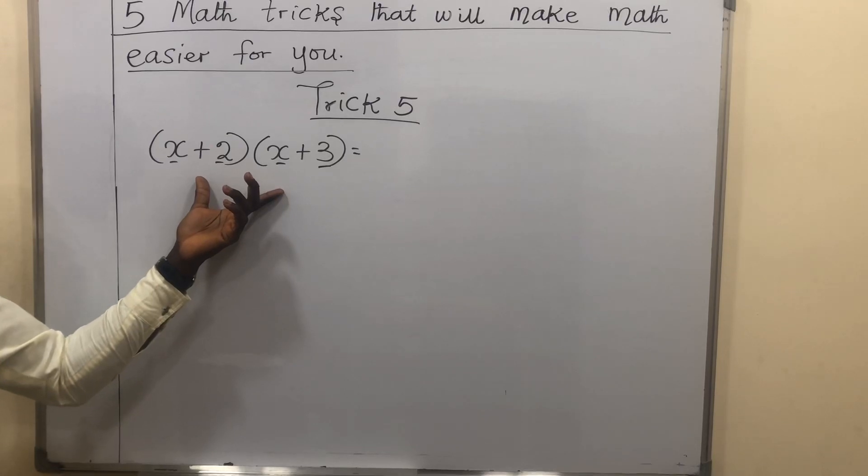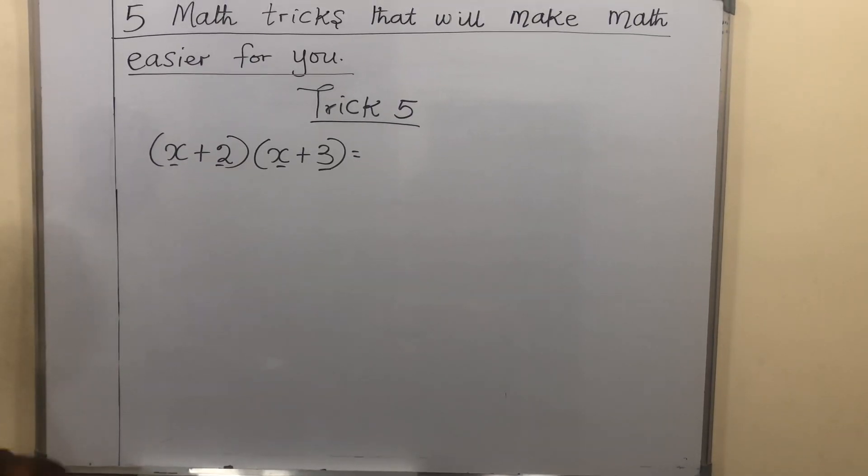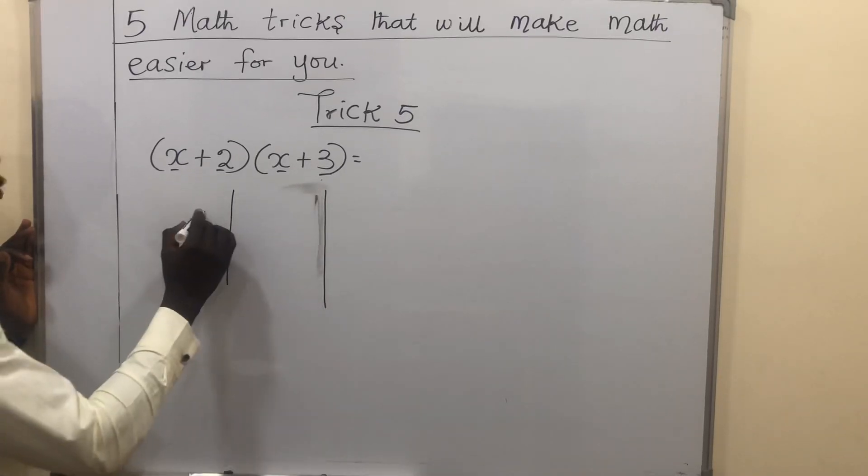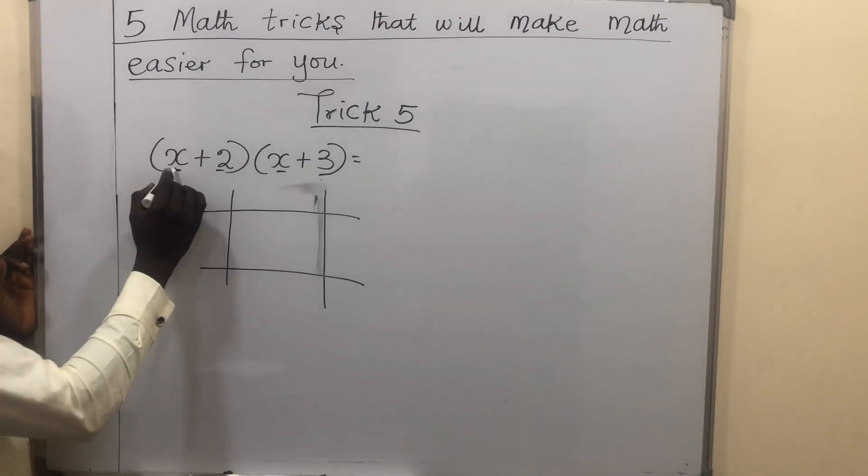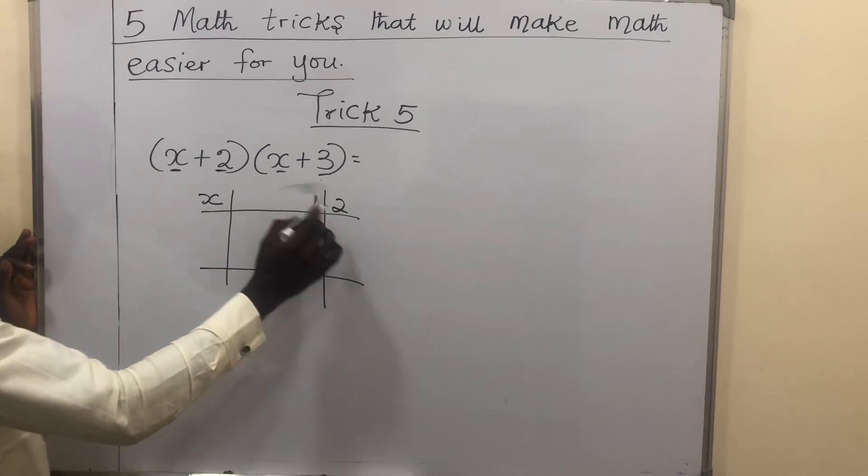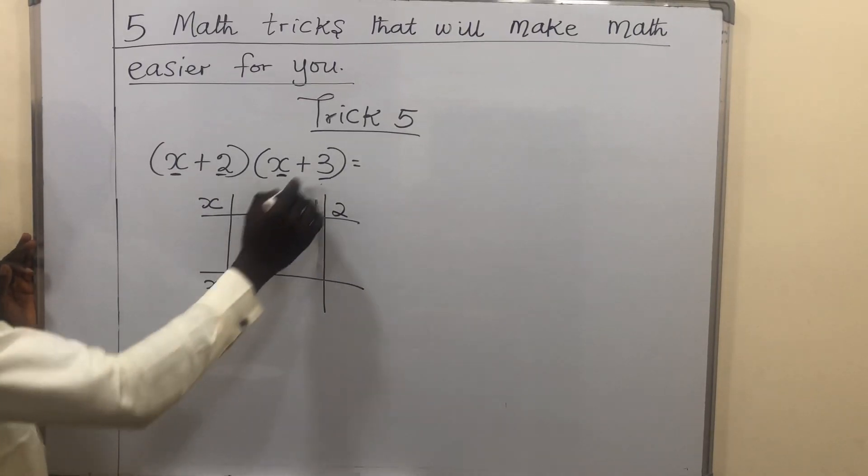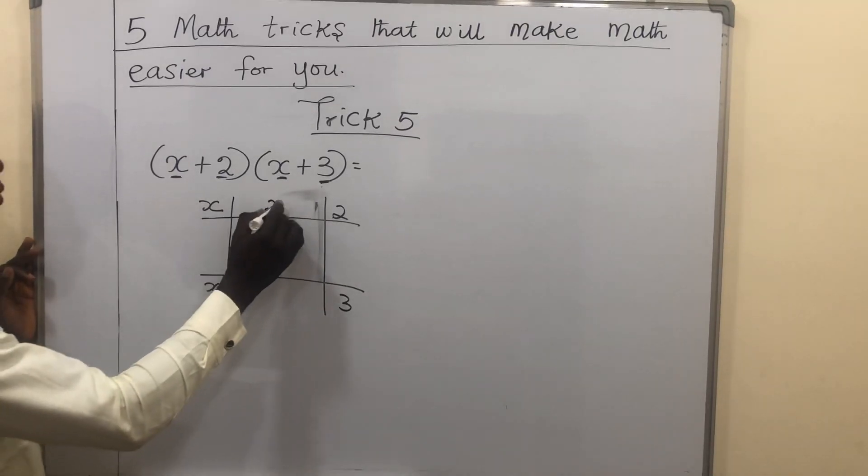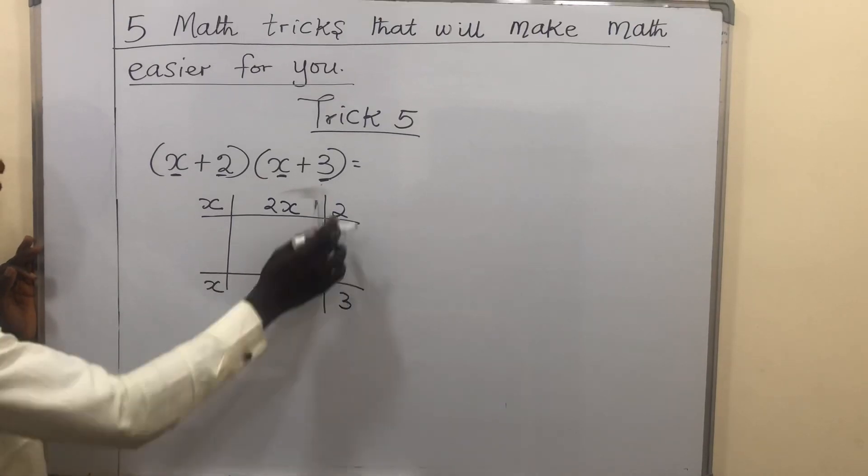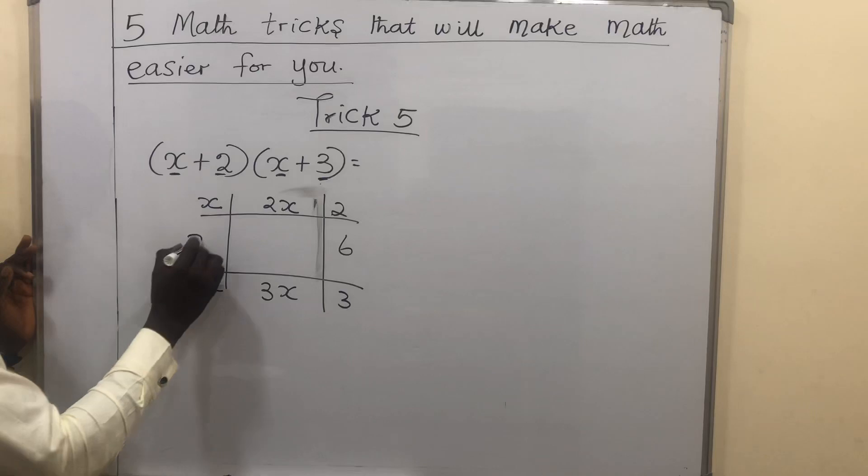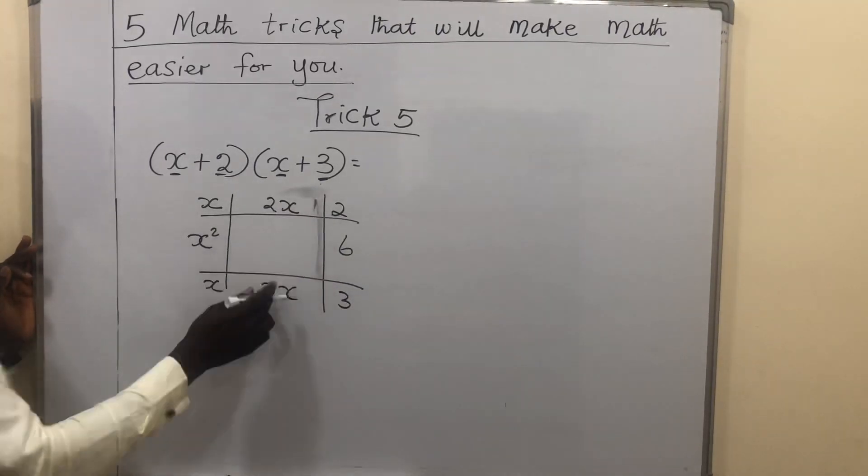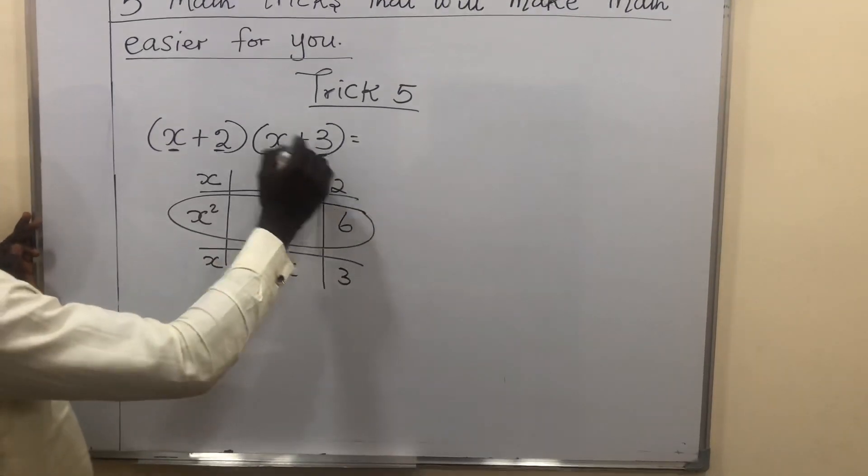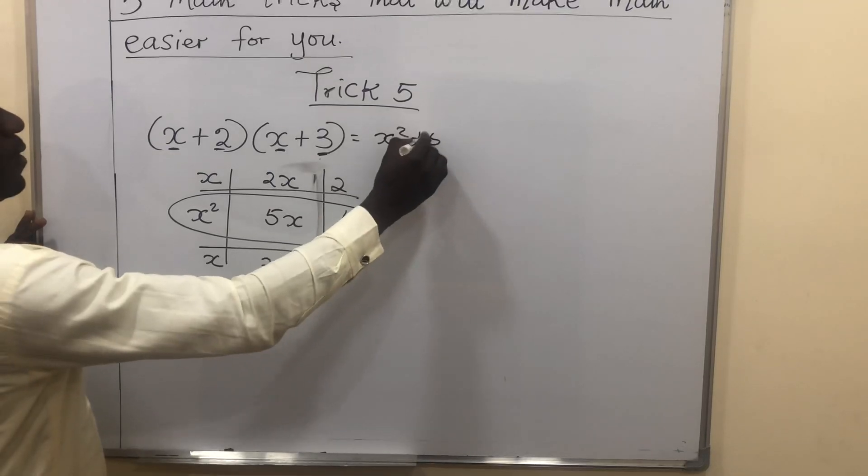Trick 5. For an expression like this, I want to show you an easy way to solve a problem like this. So, draw 2 vertical lines and 2 horizontal lines. Go to the first bracket. The x here, bring it down here. The 2, bring it over here. To the next bracket, this x, bring it to the base here. The 3, bring it here. So, for the first bracket, we have x and 2. The next bracket, we have x and 3. Now, multiply 2 times x, will give me 2x. 3 times x, will give me 3x. 3 times 2, will give me 6. 3x times x, will give me x squared. Once you are done multiplying around, add the middle terms. 3x plus 2x will give me 5x. So, what you have in the middle is your answer. So, this and this will give me x squared plus 5x plus 6.